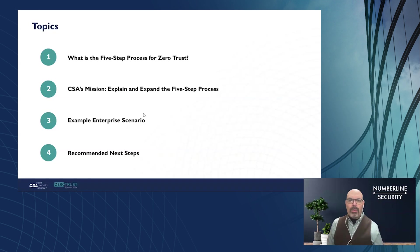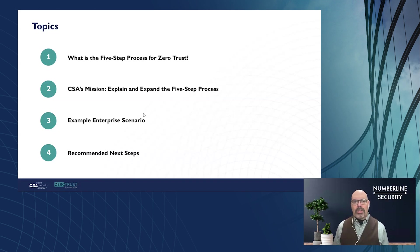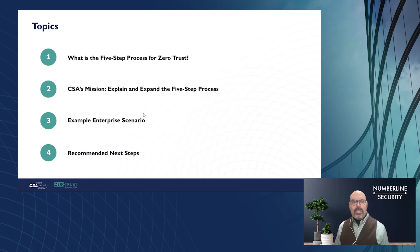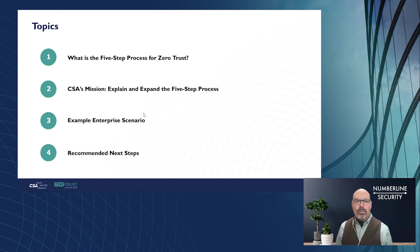We have four things we're going to cover. First, we're going to introduce what this five-step process is for zero trust. Second, we're going to talk about the mission that CSA has taken on related to the five-step process to explain and expand it. Third, we'll walk through a sample scenario. And fourth, very briefly, we'll summarize and provide some recommended next steps for all of you.